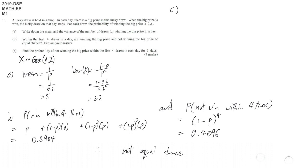And then part c: find the probability of not winning the big prize within four draws in each day for five days. So in each day there is one requirement, five days in a row. So this is binomial distribution.